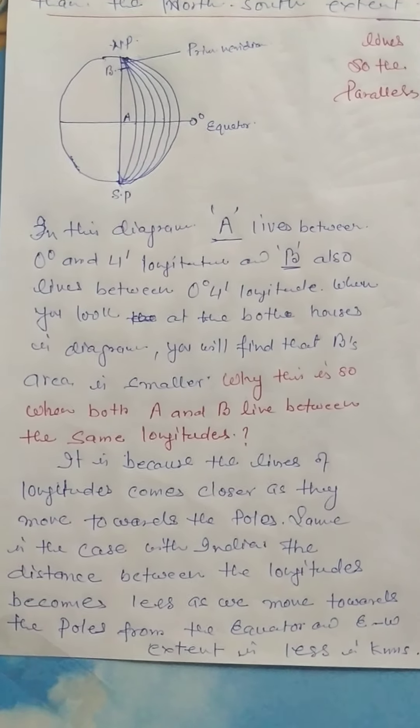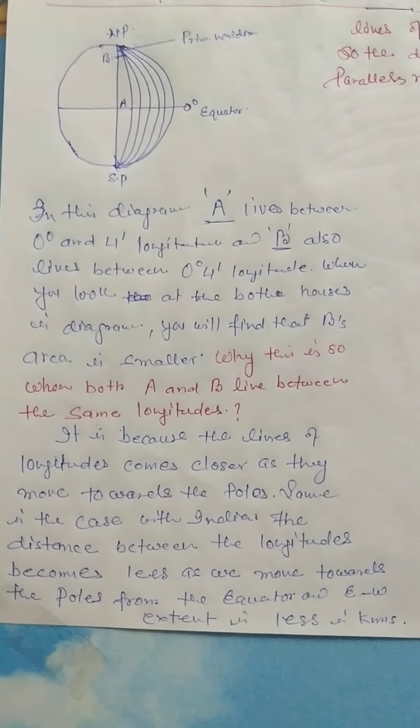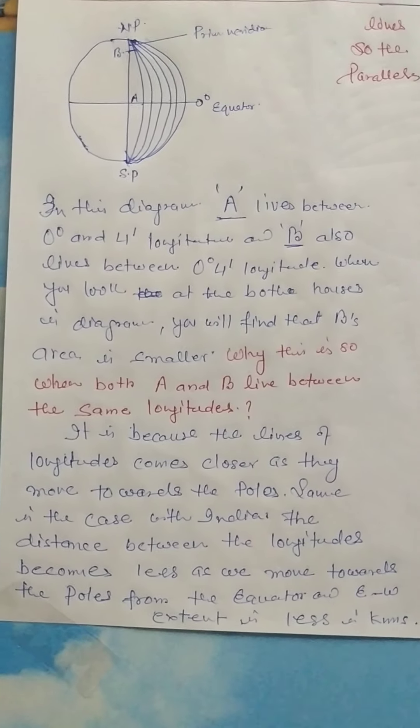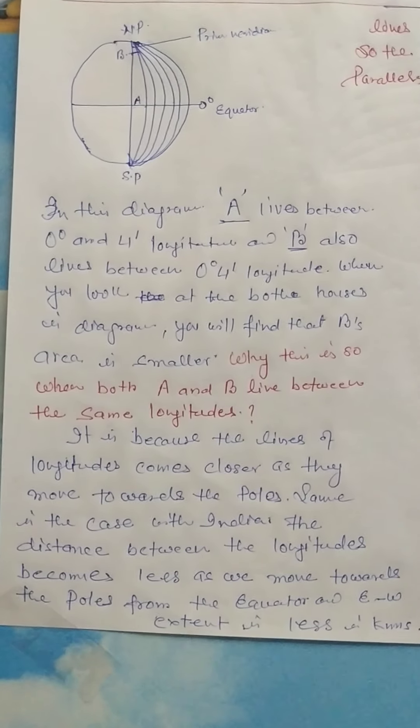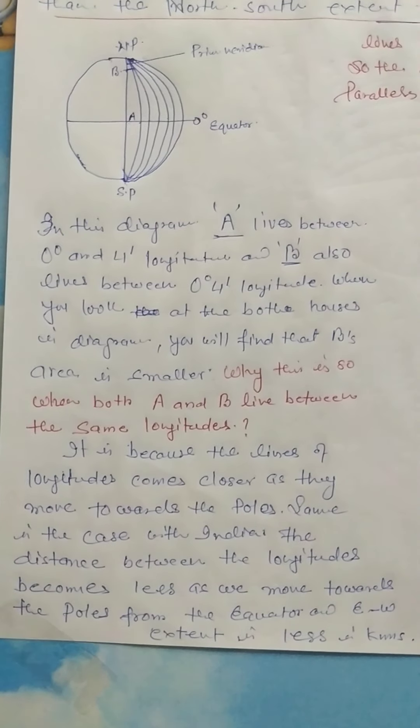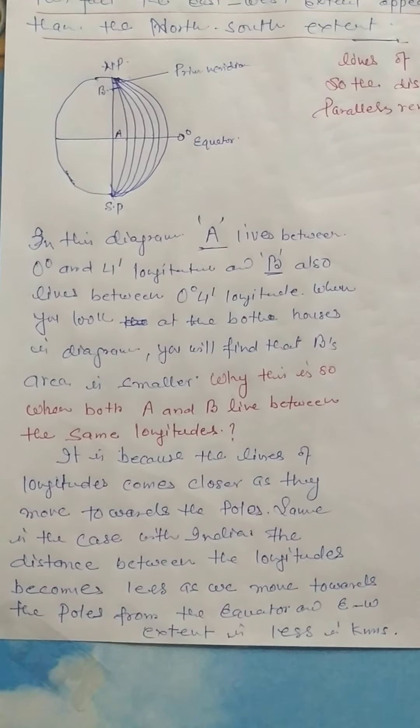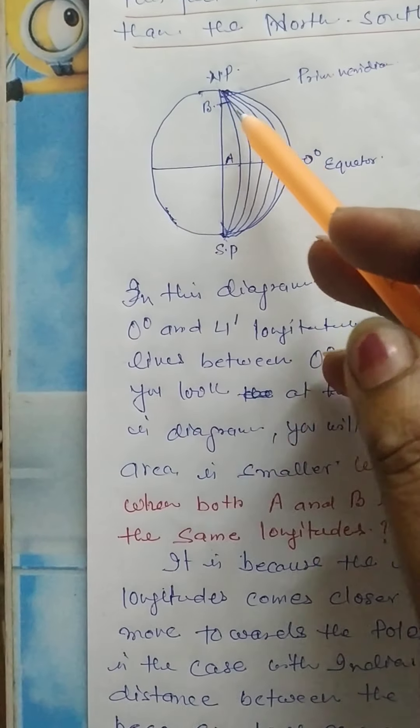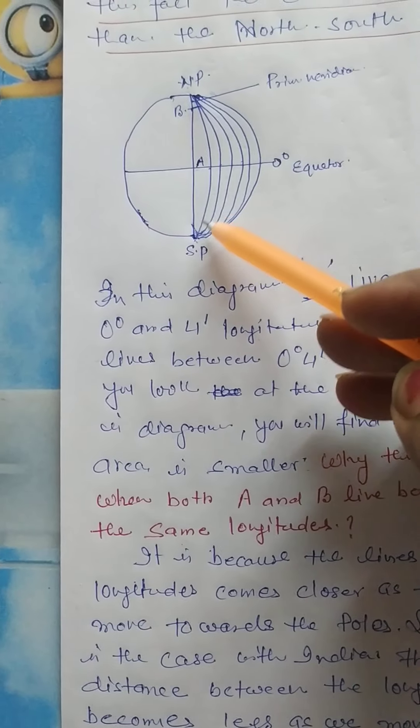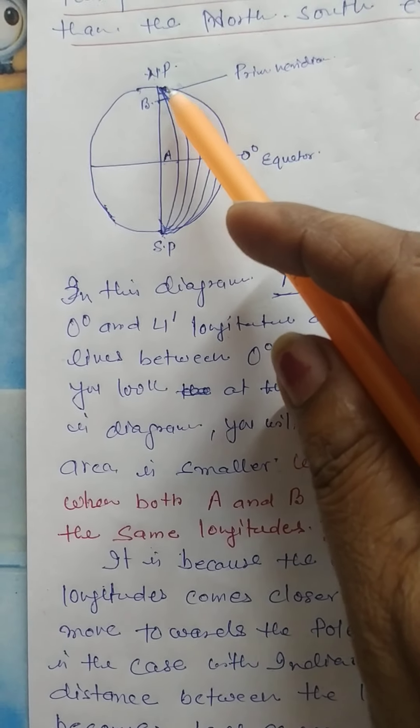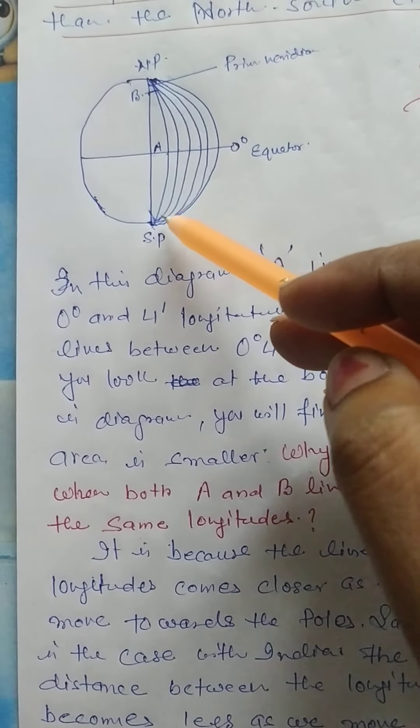And as we move from the equator towards the north pole or south pole, the distance between two latitudes remains the same.